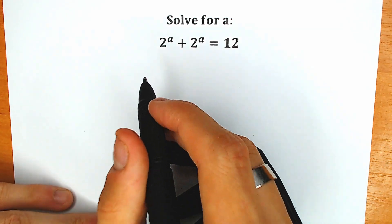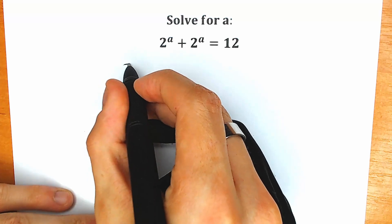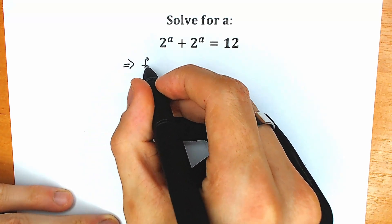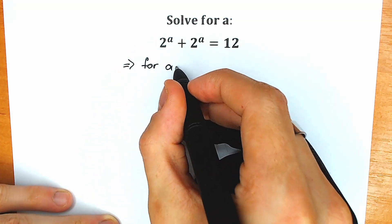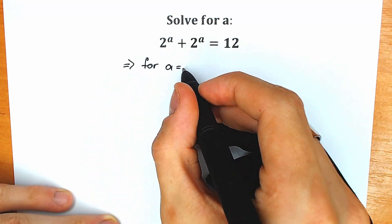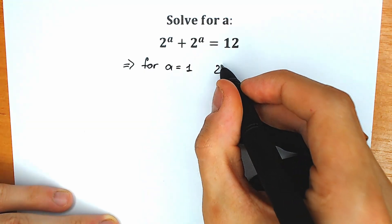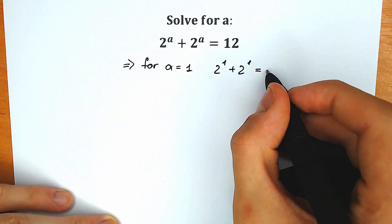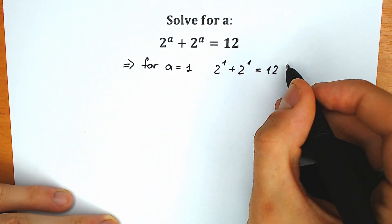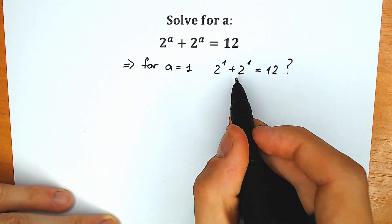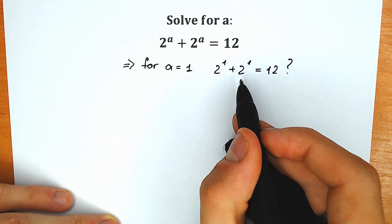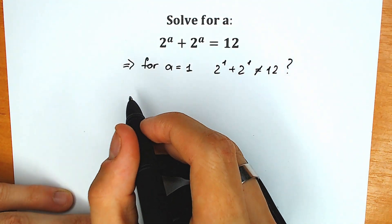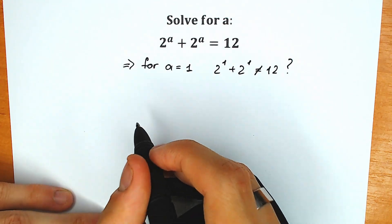A lot of students might be thinking, let's start with the inspection method. Let's check, for example, a equal to 1. So we have 2 to the power 1 plus 2 to the power 1 equal to 12. We have 2 plus 2 equal to 4, so it's not equal to 12. So a equal to 1 is not a root.